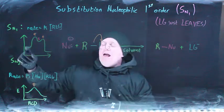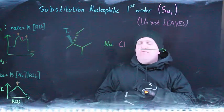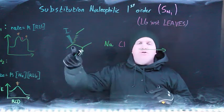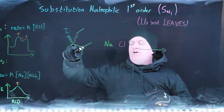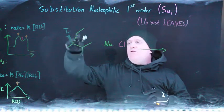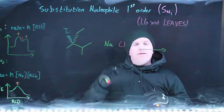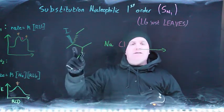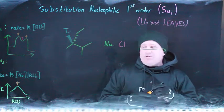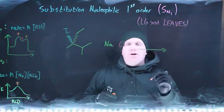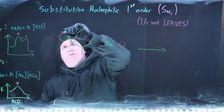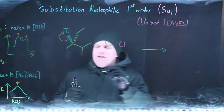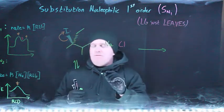To illustrate the differences, consider a tertiary substrate — where the carbon bearing the leaving group is bonded to three other carbons — and make it chiral. A tertiary substrate is important because an SN2 reaction cannot take place on a tertiary substrate. Walking through the SN1 mechanism: first, the leaving group leaves, which is the slow step, creating an equilibrium here.